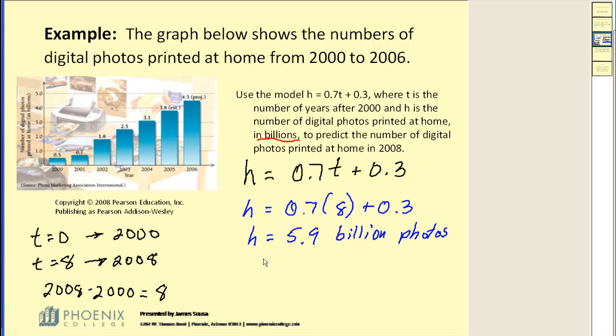Okay, if we want to convert this to expanded notation, we would take the 5.9 and multiply it by 1 billion. Now, if you're not sure how many zeros, just take a moment: there's a thousand, that would be a million, so we need three more, that would be a billion. So in expanded notation, this would be 5.9 billion photos.